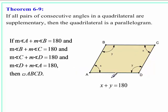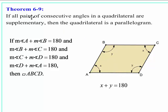Theorem 6-9: if consecutive angles, or consecutive interior angles, are supplementary, then it's a parallelogram. If these two angles are consecutive and supplementary, then line AB would be parallel to CD. Likewise, the next pair of consecutive angles — if they were supplementary — would allow you to say that AD is parallel to BC. That clearly means the opposite sides are parallel, so it would be a parallelogram.